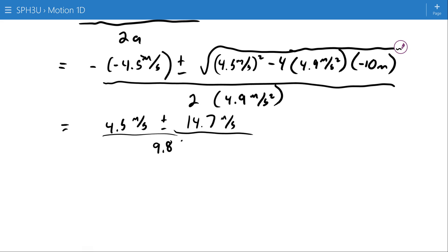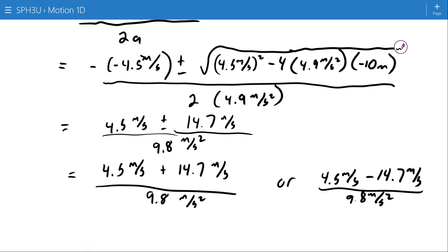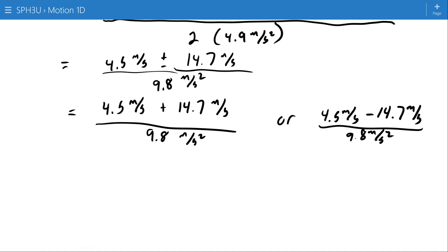The bottom root, 9.8 meters per second squared. And then I can write out my two roots separately. Okay, 14.7 plus 4.5 divided by, oh, try it again, 4.5 plus 14.7 divided by 9.8 equals 1.96.